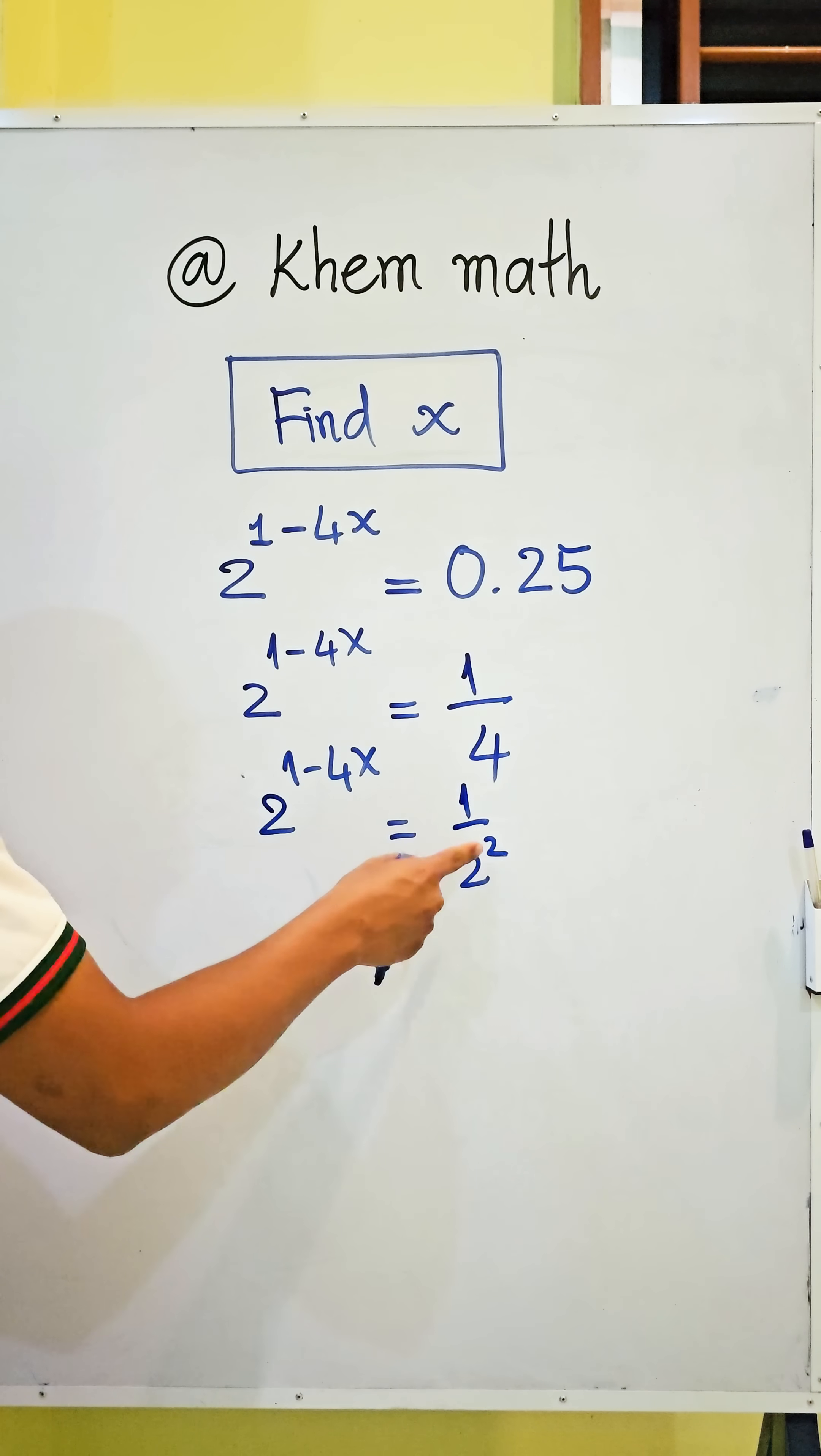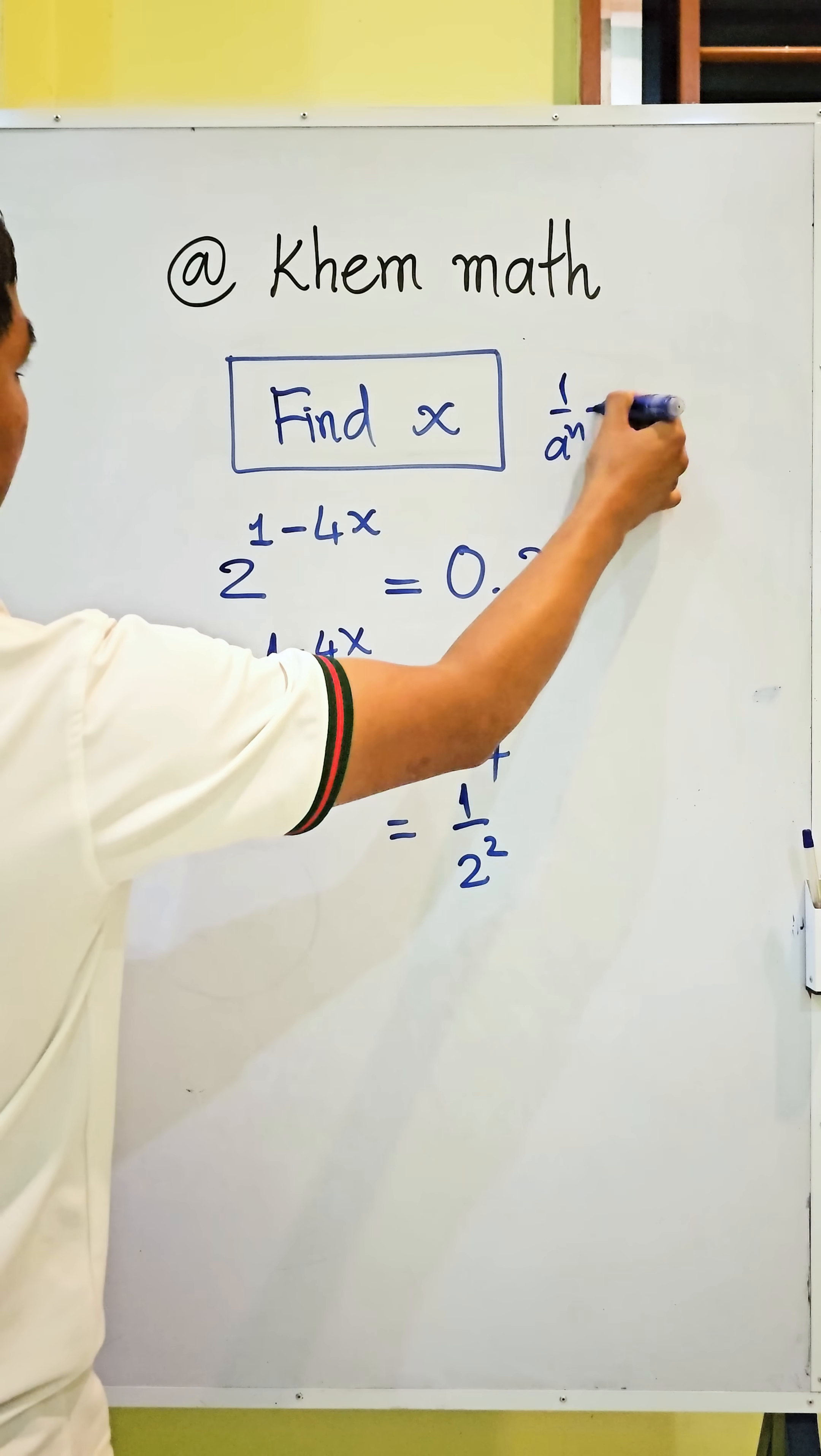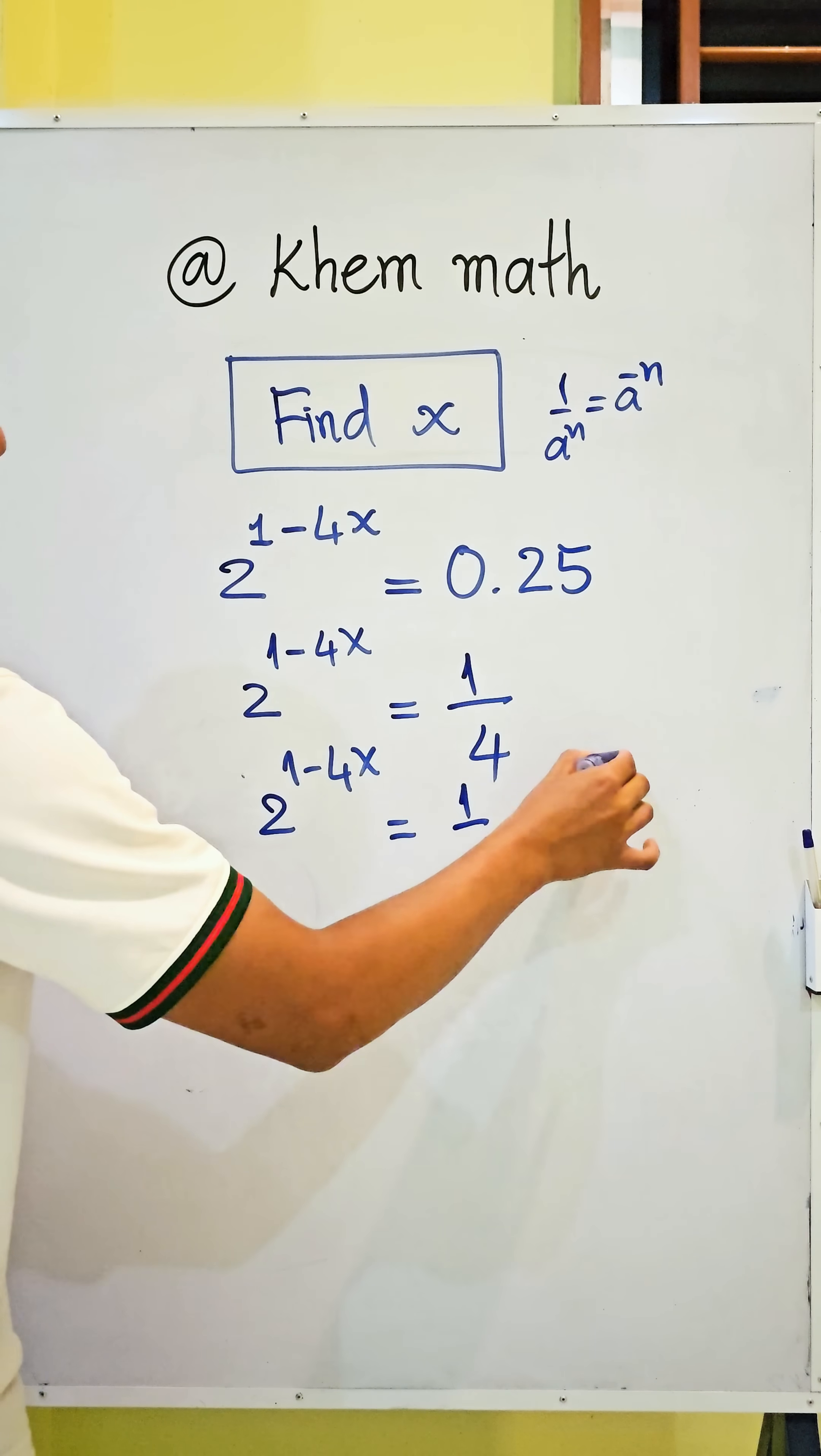Using the formula 1 divided by a to the power n equals a to the power negative n, we get 2 to the power negative 2.